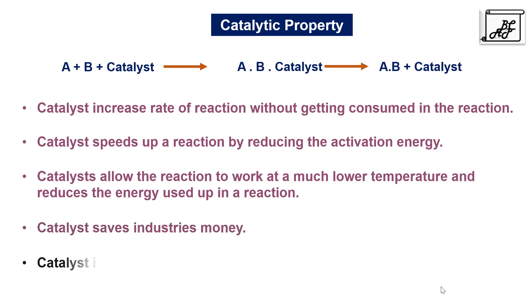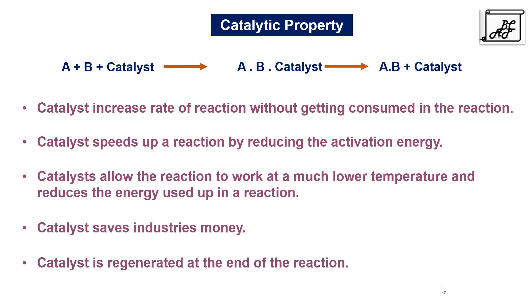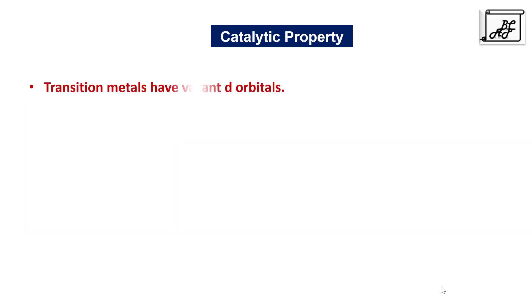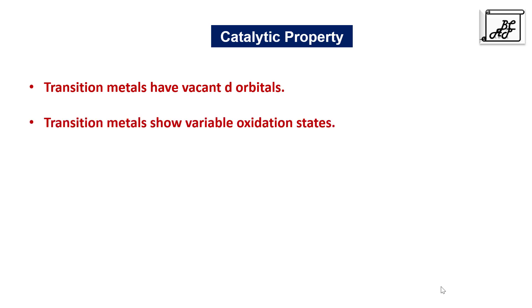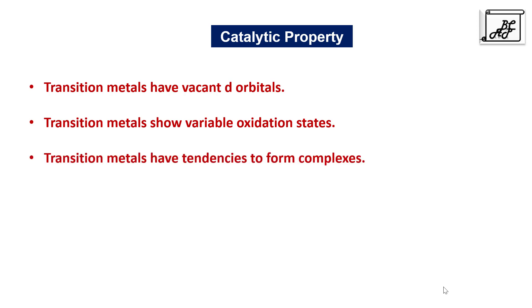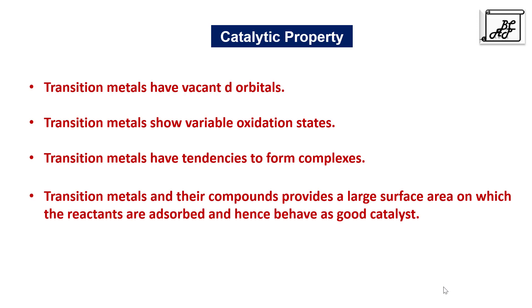All transition metals have the ability to be used as catalysts in specific reactions. This is because many transition metals have vacant orbitals, they show variable oxidation states — for example manganese shows oxidation states from +2 to +7 — they have the tendency to form various complexes, and their compounds provide a large surface area on which reactants can be adsorbed, hence behaving as good catalysts.